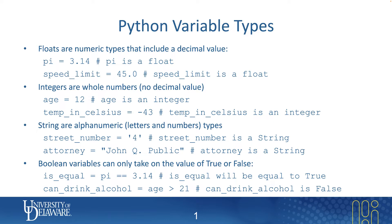In the second example, we use the expression can_drink_alcohol. It will be assigned the value of True or False depending on what is on the right side of the single equal sign. In this situation, we're checking whether age is greater than 21, which is the drinking age in Delaware. Since we assigned age to be 12 above, 12 is not greater than 21. So can_drink_alcohol will get the value of False.